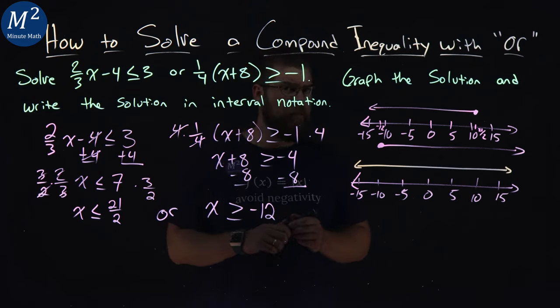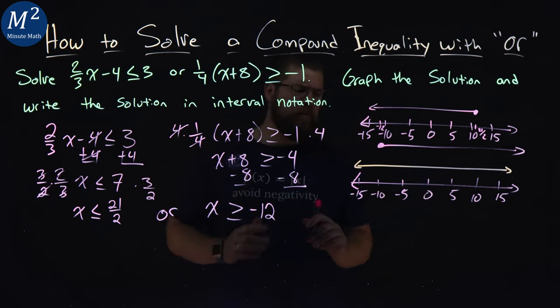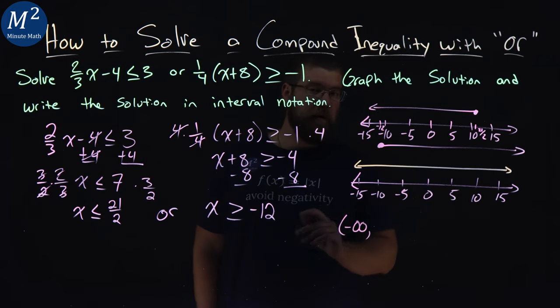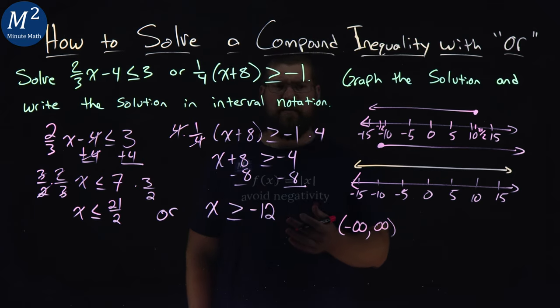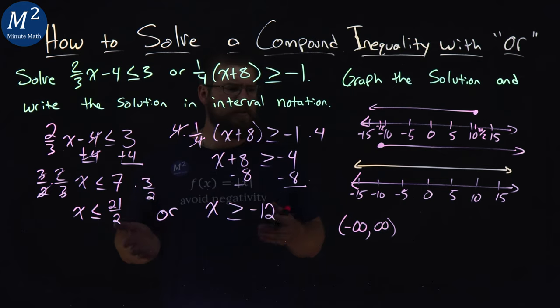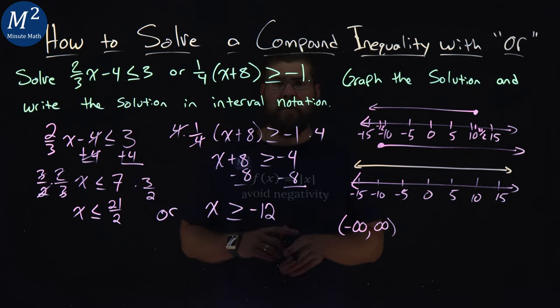All real numbers are solutions to our compound inequality with or. So, how to write this in interval notation? Well, x can go down to negative infinity, and it goes all the way to positive infinity. And there we have it. Our solution here is x can be from negative infinity to positive infinity from a compound inequality with or.